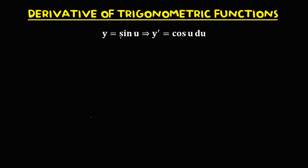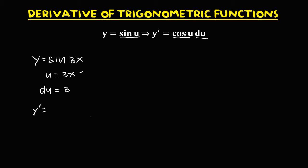For the derivative of sine u, that's cosine u times the derivative of u. So if we have y equals sine 3x, u equals 3x and the derivative of u is 3. Since the derivative of sine is cosine, we have cosine 3x times du, that's 3. Therefore, y prime is equal to 3 times cosine 3x.